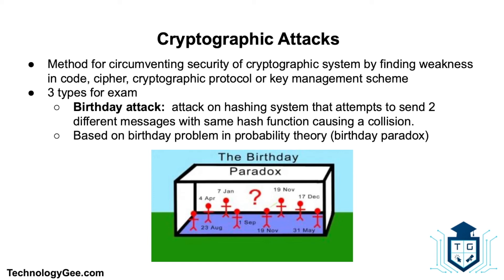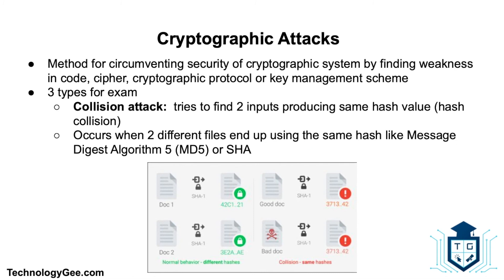The birthday paradox can be summed up simply: a teacher with a class of 30 students asks everybody's birthday — ignoring leap years — to determine whether any two students have the same birthday, corresponding to a hash collision. Intuitively this chance may seem small; however, the probability that at least one student shares a birthday with any other student is around 70 percent. If attackers can find any two messages that digest the same way or use the same hash value, they can deceive a user into receiving the wrong message. Using SSH or encrypting an entire message that has been hashed can help protect against birthday attacks.